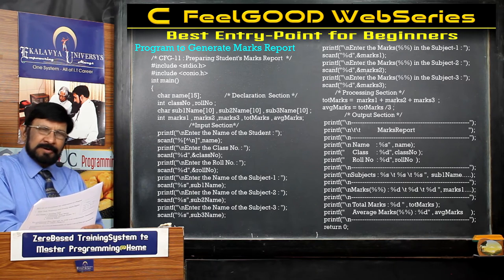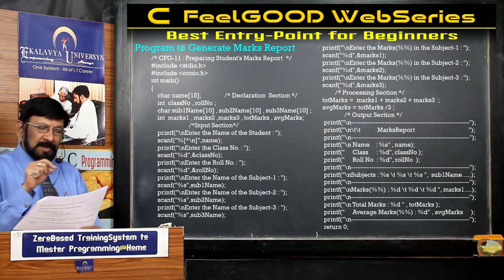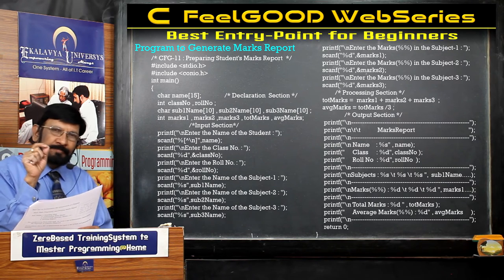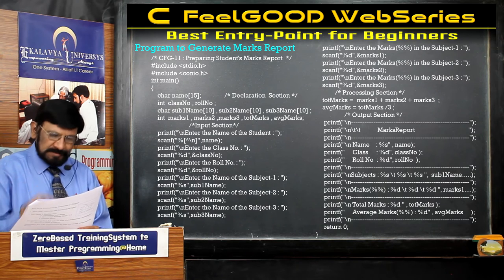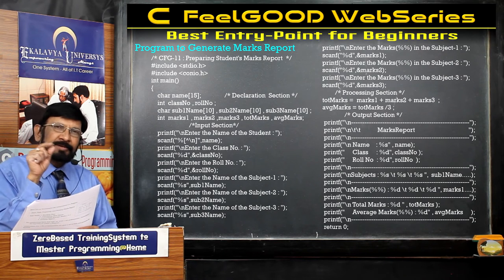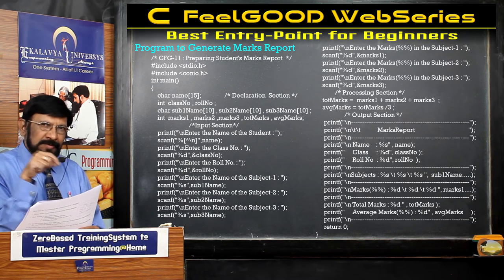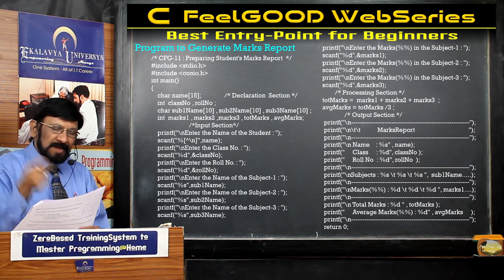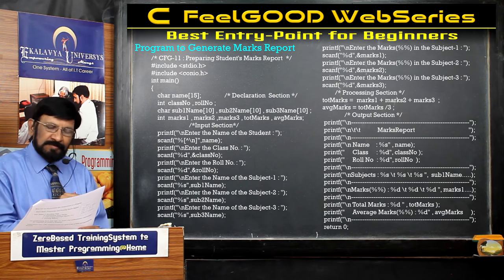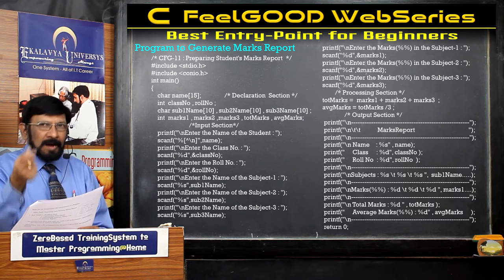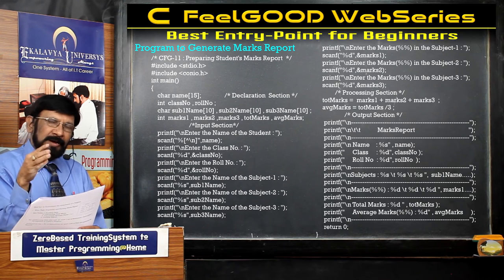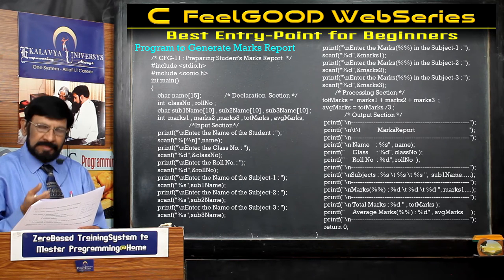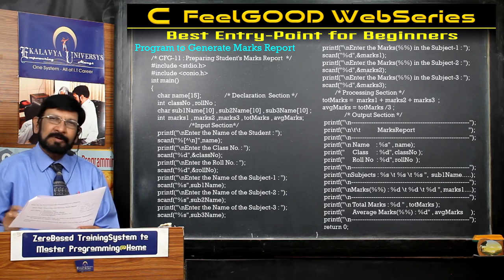In this program you find several semicolons — each one is called a statement. That means a computer program is a collection of statements, or a set of statements. Each statement is known as an instruction to the computer. C language is the computer's language. That's why whatever instruction you write in the name of a statement, your computer can understand and implement it. Because of that, your predefined result — the marks report — is printed. This is the secret of a computer program.